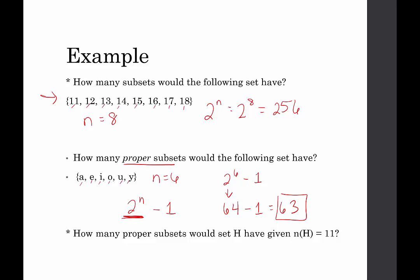How many proper subsets would set H have, given that the cardinal number of H is 11? This would be two to the eleventh minus one. Two to the ninth is 512, then 1024, then 2048. So two to the eleventh is 2048, minus one gives 2047 proper subsets. Good thing we're not listing those out — that would be a huge investment of time.